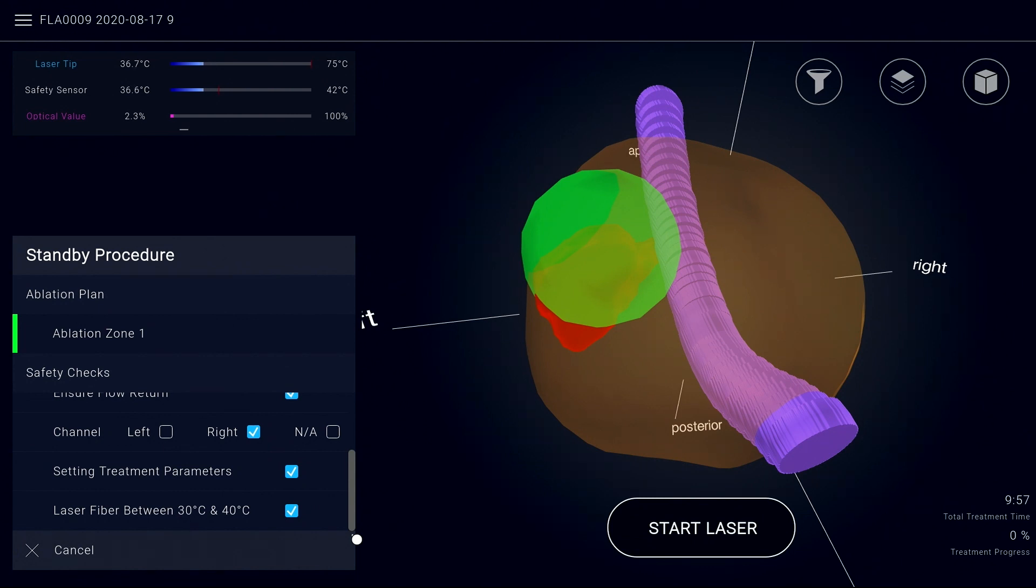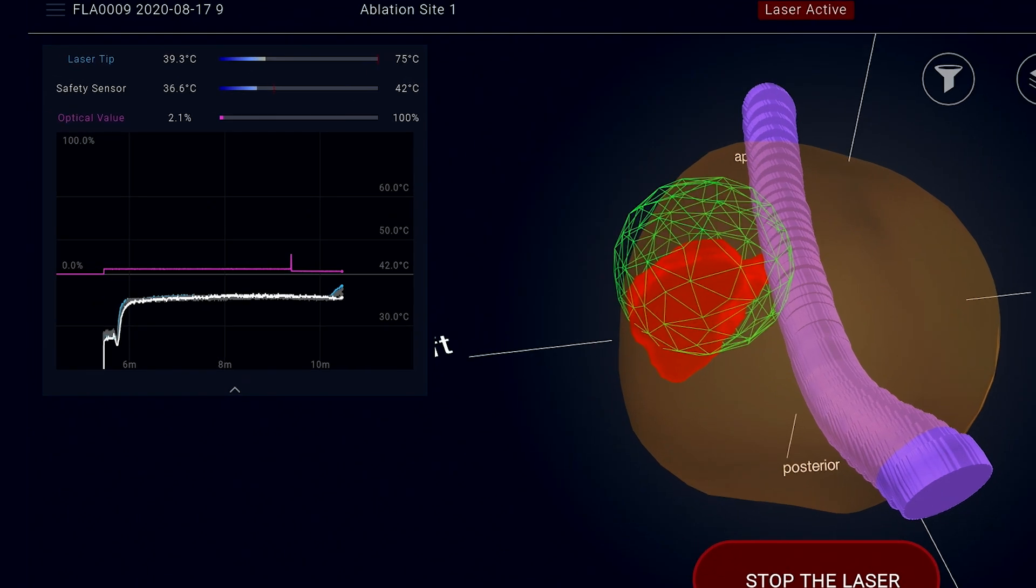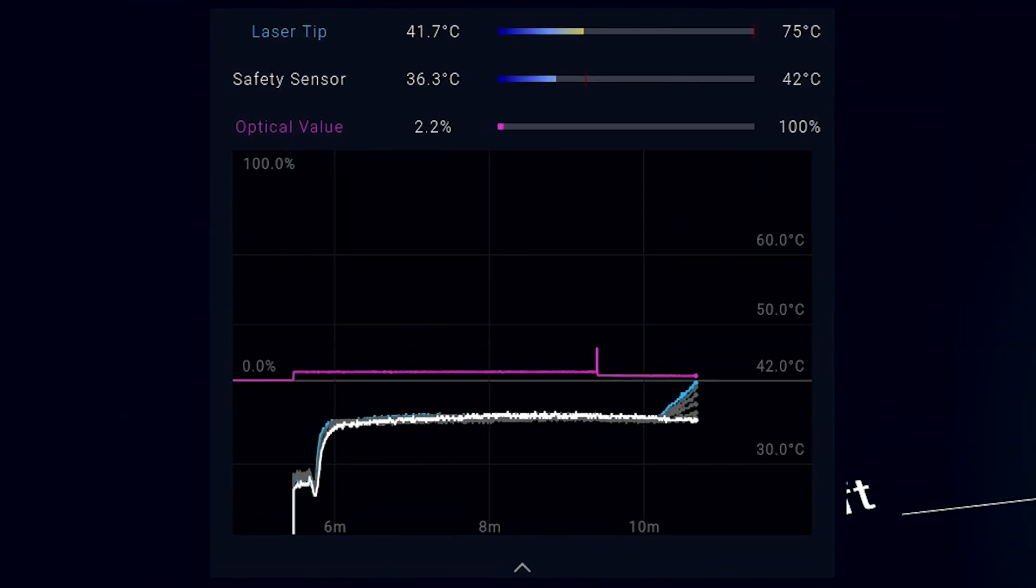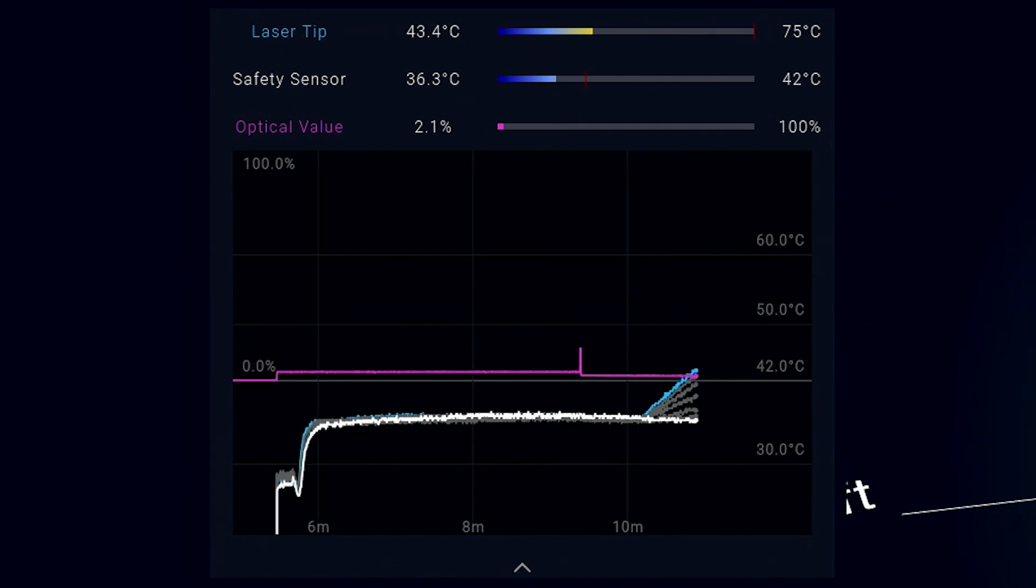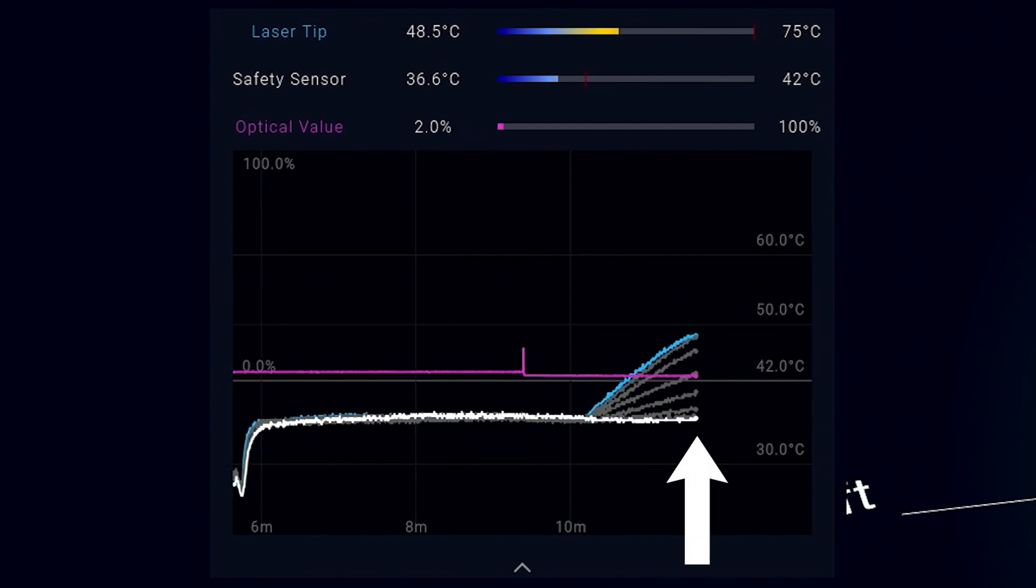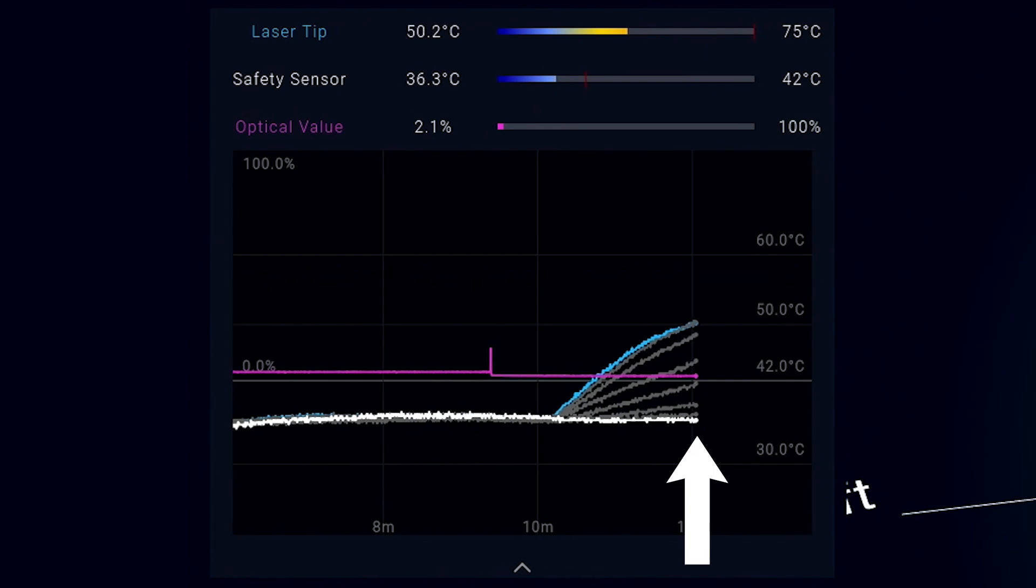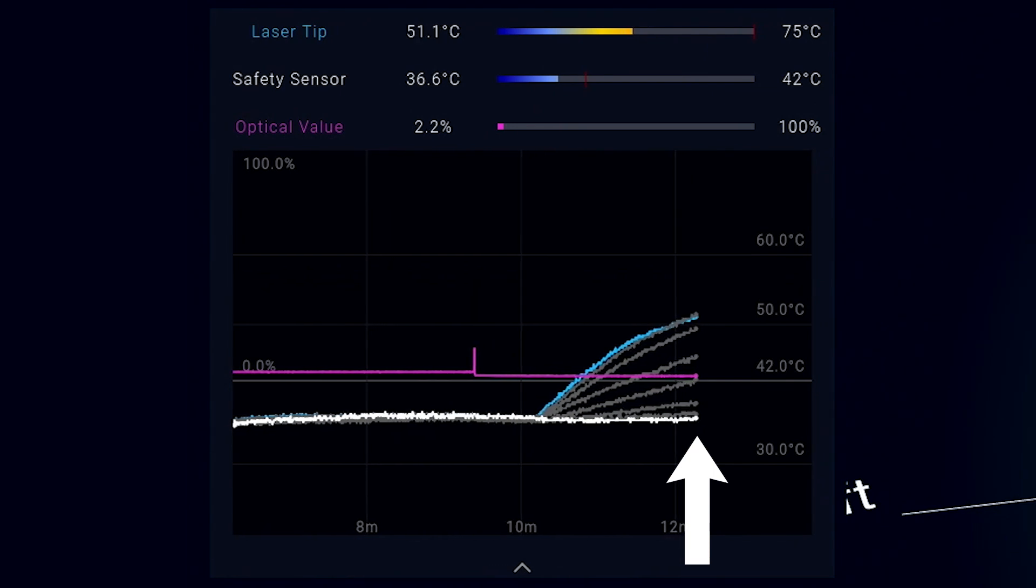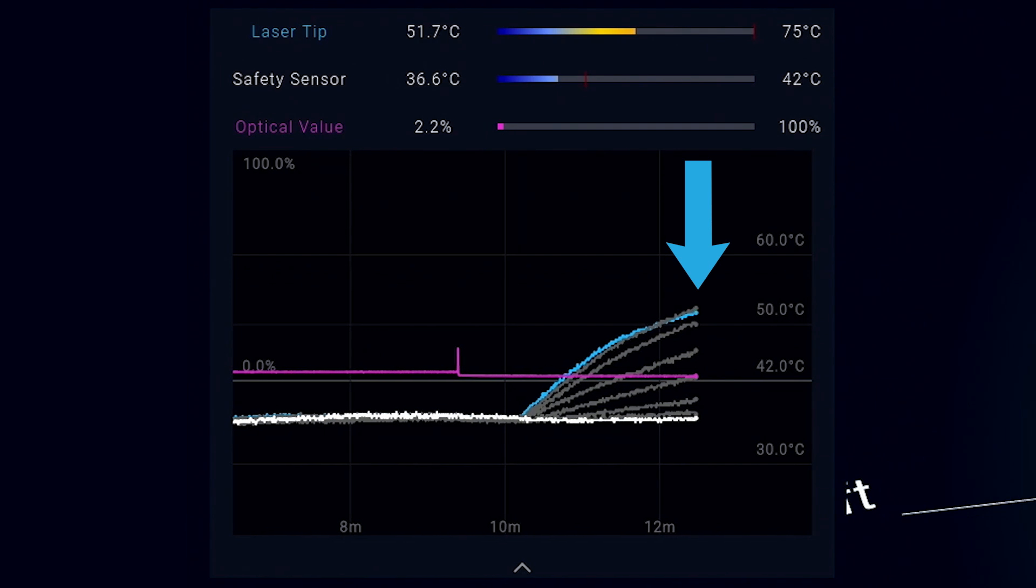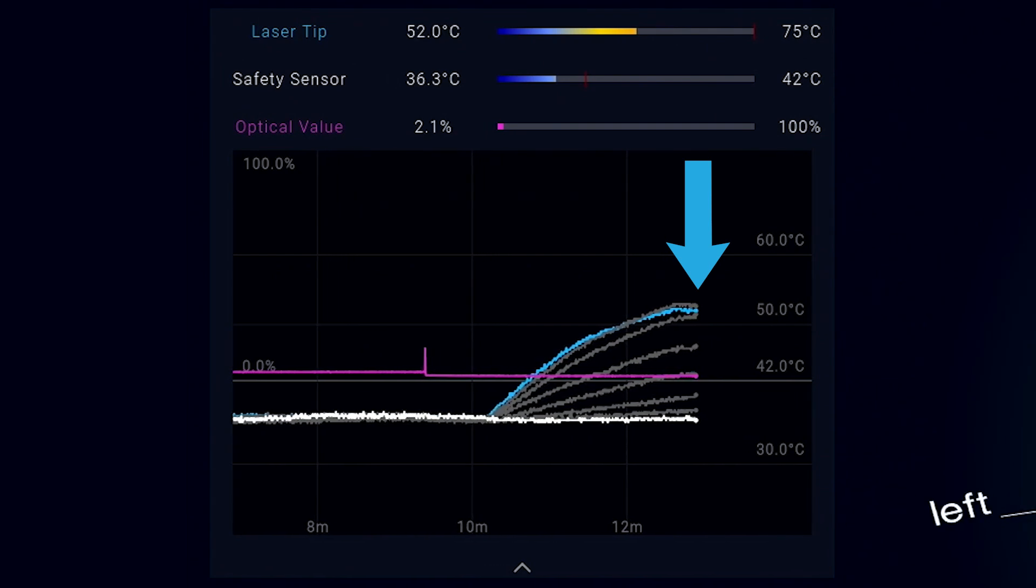Once the safety checklist is complete, the operator may then press the start laser button. Temperature recordings will appear on the left side of the screen that evaluate multiple thermocouple positions within the thermal probe. The thermocouple closest to the rectum is displayed as a white line. This temperature should not exceed 42 degrees and will trigger an automatic stop if this temperature is reached. The thermocouple closest to the laser tip is marked in blue and will gradually increase temperature after laser activation.